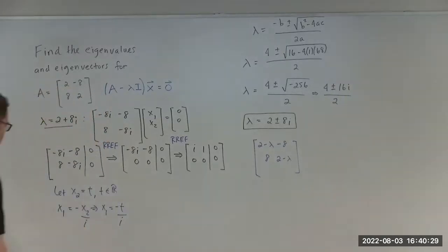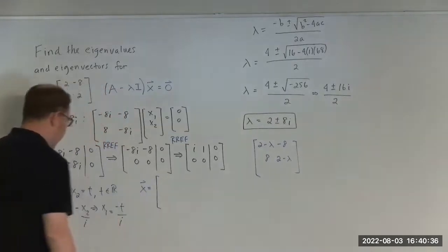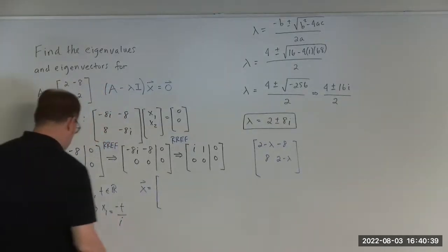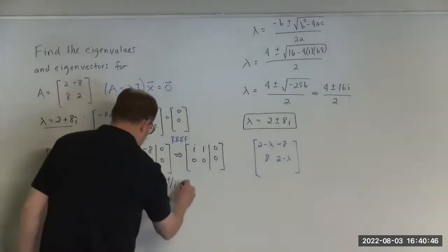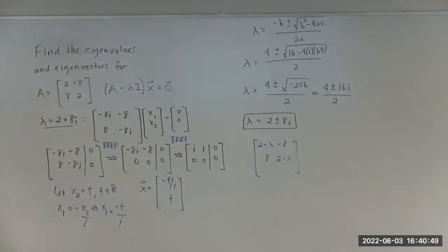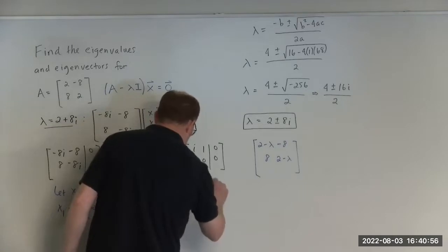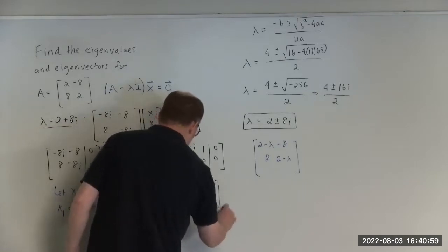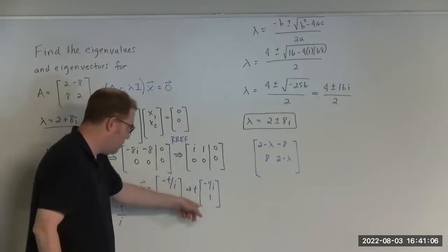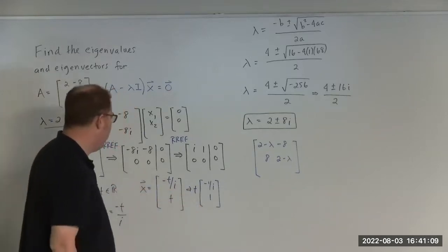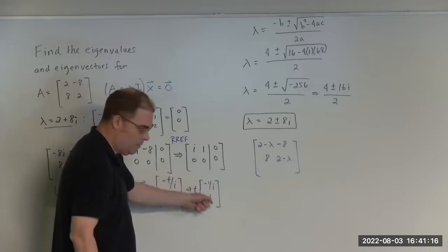So x₁ is going to be equal to −t over i. We can write this formally: the solution vector x, composed of x₁ and x₂, is (−t/i, t), where t is a real number. Writing this in parametric form, the eigenspace is the span of the vector (−1/i, 1). You can choose any value for t — there are infinitely many choices — and each gives a valid eigenvector.